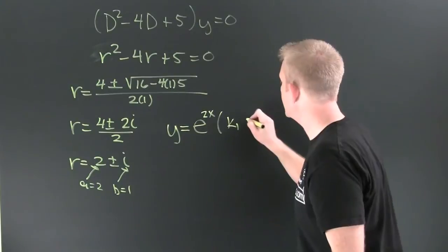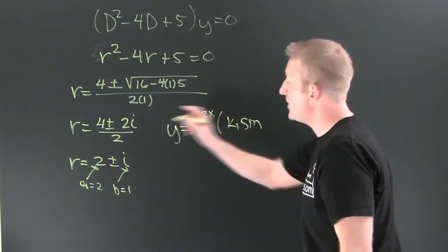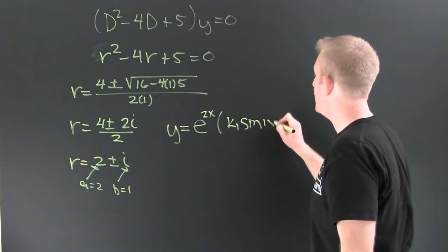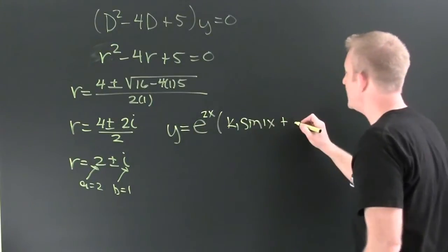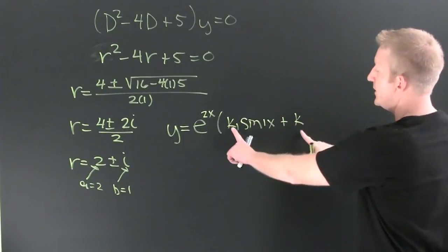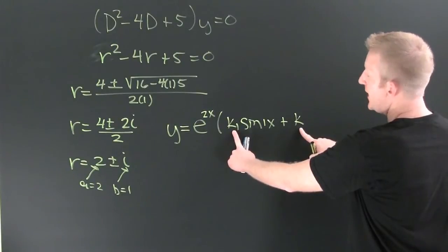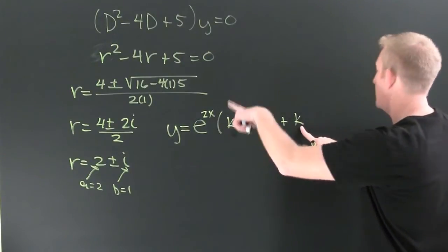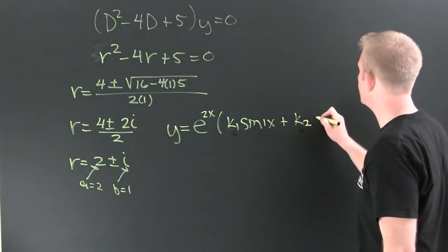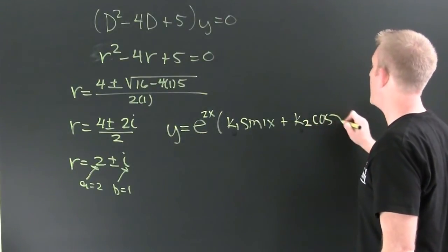So this is k1 sine of the imaginary part, 1x, plus k2. Remember if they were repeated roots, then this would be k1 plus k2x and this would be k3 plus k4x. But this is k2 cosine x.